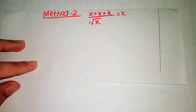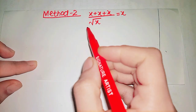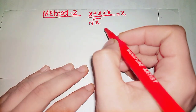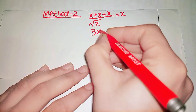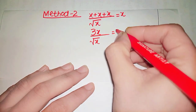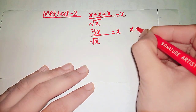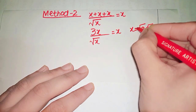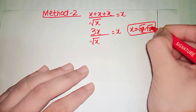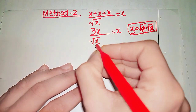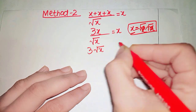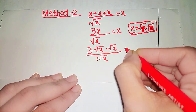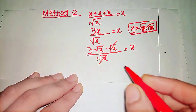Now we apply a second method. We write 3x over square root of x as 3 times square root of x times square root of x, all over square root of x. The square root of x terms cancel, and our equation simplifies to 3 times square root of x equals x.